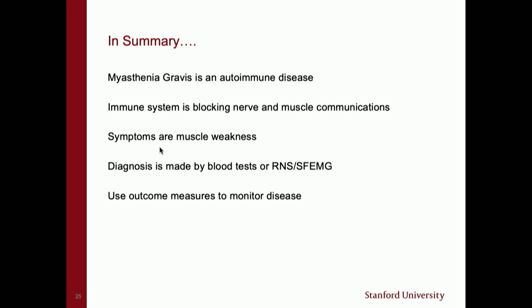In summary: MG is an autoimmune disease where the immune system is blocking nerve and muscle communication. The main symptoms are muscle weakness and fatigue. In the majority of cases we can make a diagnosis through blood tests, but some patients require electrophysiological testing. We can use outcome measures to monitor disease, and that part of the field continues to grow as we think of better biomarkers and outcome measures to measure disease response.